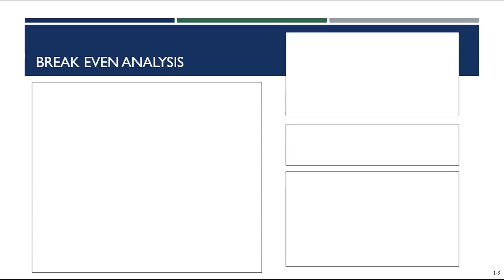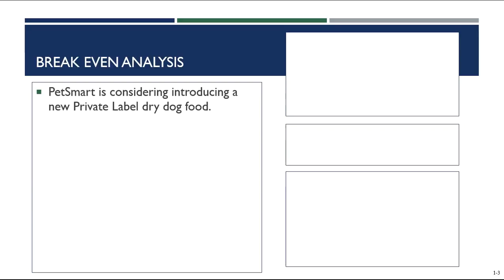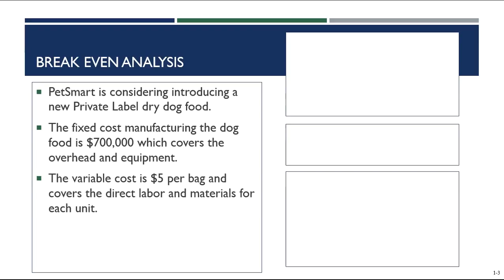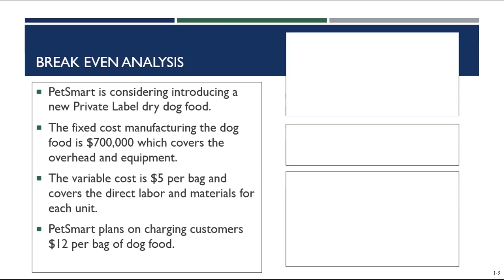Let's start by looking at an example of the breakeven analysis. We're going to pretend that we are PetSmart and we are considering introducing a new private label dry dog food in our stores. We get some information from our manufacturer and they tell us that the fixed cost for the manufacturing is going to be $700,000, covering equipment, overhead, and other fixed costs. Our manufacturer also tells us that the variable cost is going to be $5 per bag, covering labor and materials for the individual bag of food. PetSmart has determined they are going to charge customers $12 per bag. So how many bags of dog food do we need to sell to break even?